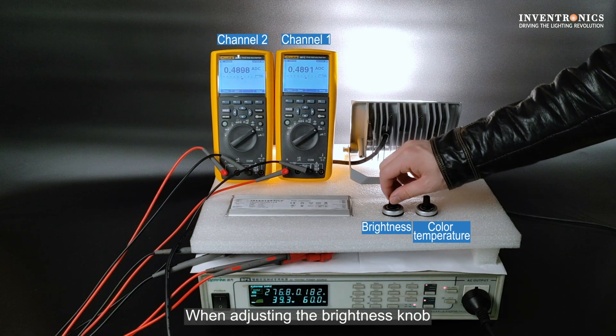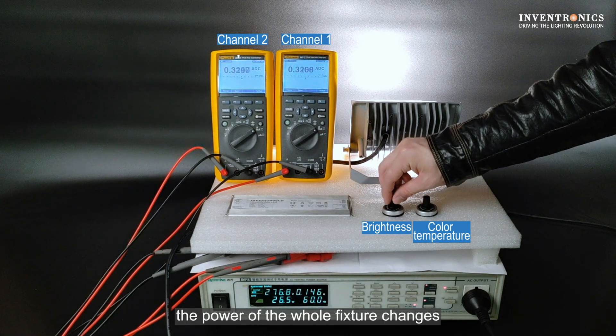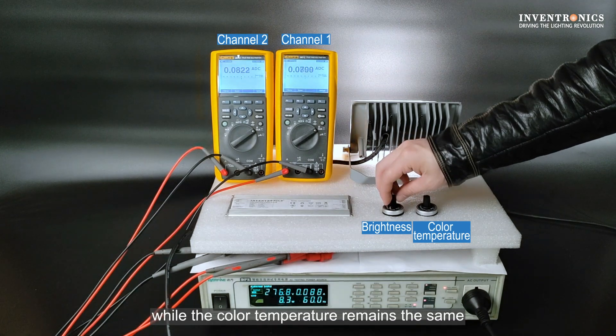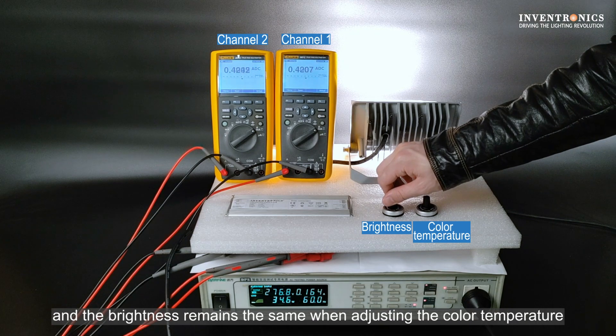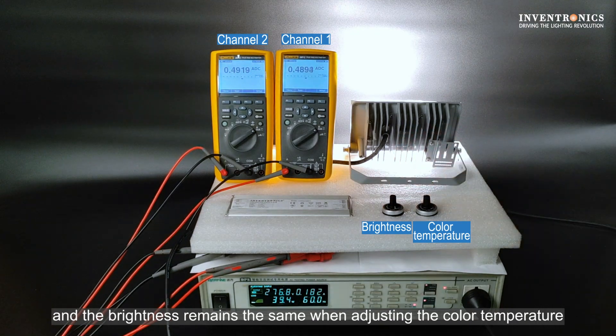When adjusting the brightness knob, the power of the whole fixture changes while the color temperature remains the same. The color temperature remains the same when adjusting the brightness and the brightness remains the same when adjusting the color temperature.